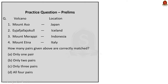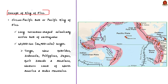This MCQ gives a list of recently erupted volcanoes and asks us to match them with their locations. Volcanoes and recently erupted volcanoes are favorites of UPSC and often appear in questions. Before answering, let us talk briefly about the concept of the Pacific Ring of Fire. It is also called the Circum-Pacific Belt — a long horseshoe-shaped, seismically active belt of earthquake epicenters, volcanoes and tectonic plate boundaries that fringes the Pacific Basin.